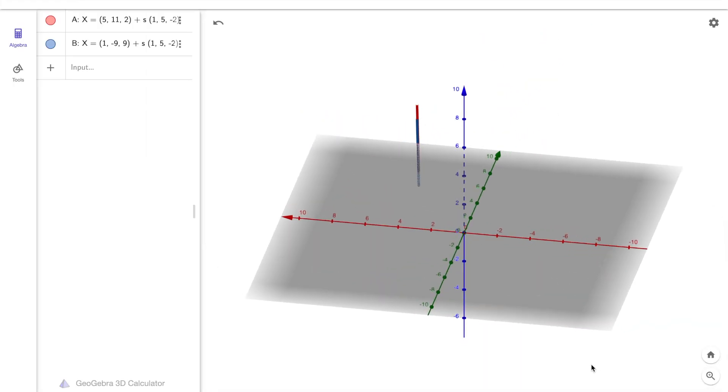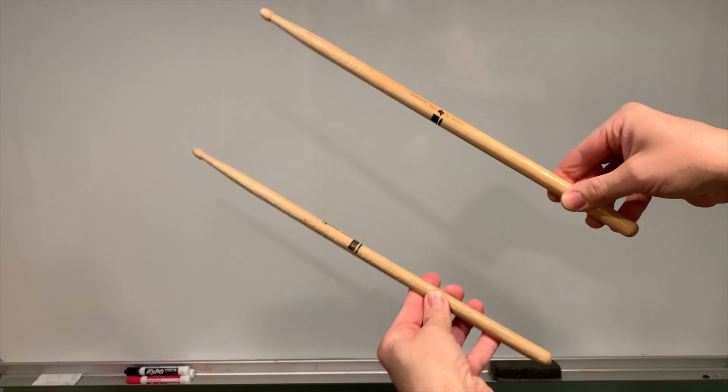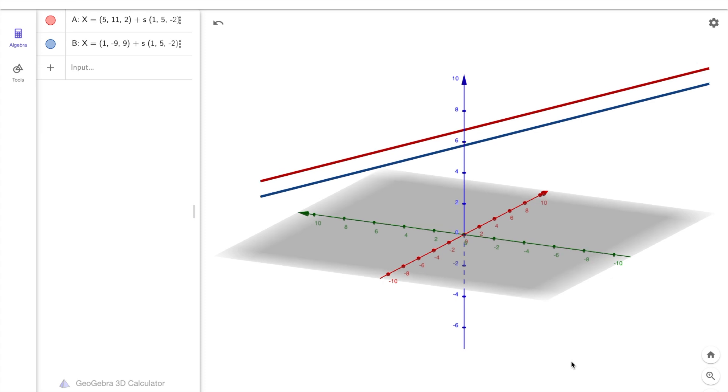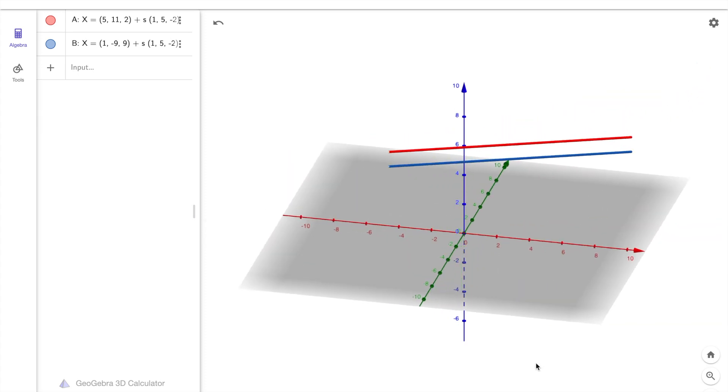It should also make sense that two lines in three dimensions can also be parallel. Again, if you hold two sticks up in the air, you'll see that you can make them parallel to one another so that they never touch. And as I move around this three-dimensional graph, you can see that these two lines will never intersect because they are parallel.